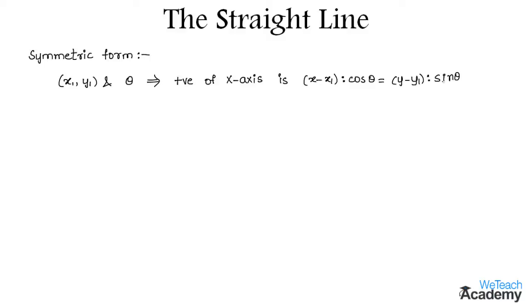Now let us discuss an example where we need to find the equation of a straight line in the symmetric form. The given slope m equals minus 1 by root 3, and a point P minus 2 comma 0 on the line.